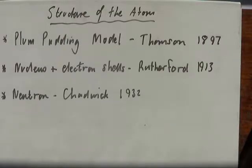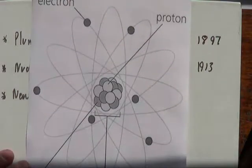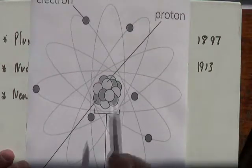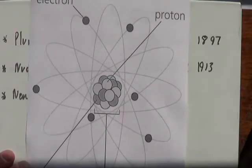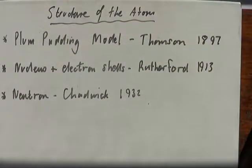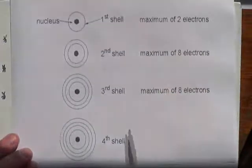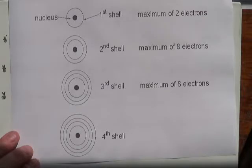A little bit about the history of the atom first of all. The atom as we know it nowadays has basically got our nucleus with shells of electrons orbiting around it. It's probably a bit simpler to look at it with our nucleus in the middle and our shells of electrons around the outside.